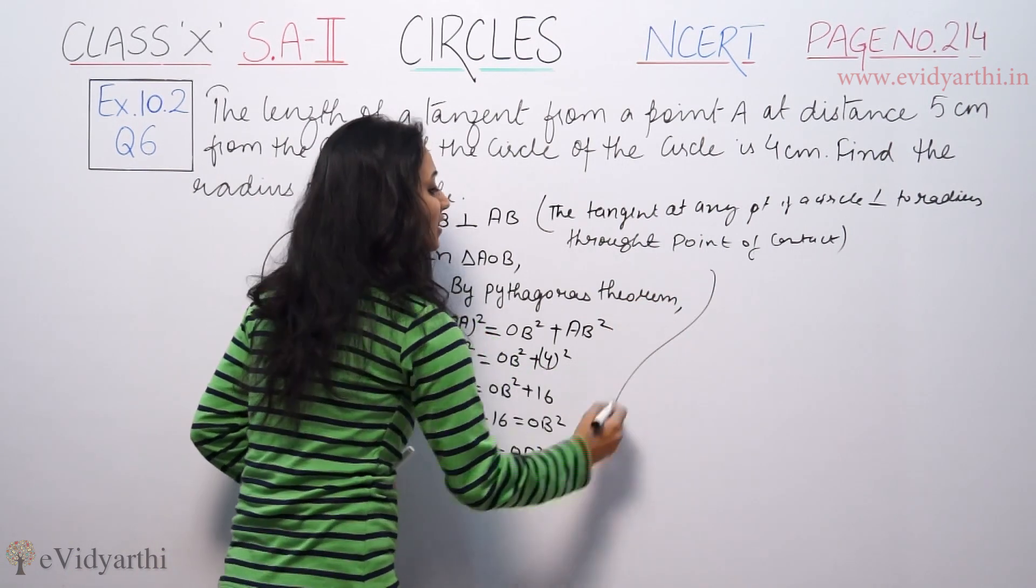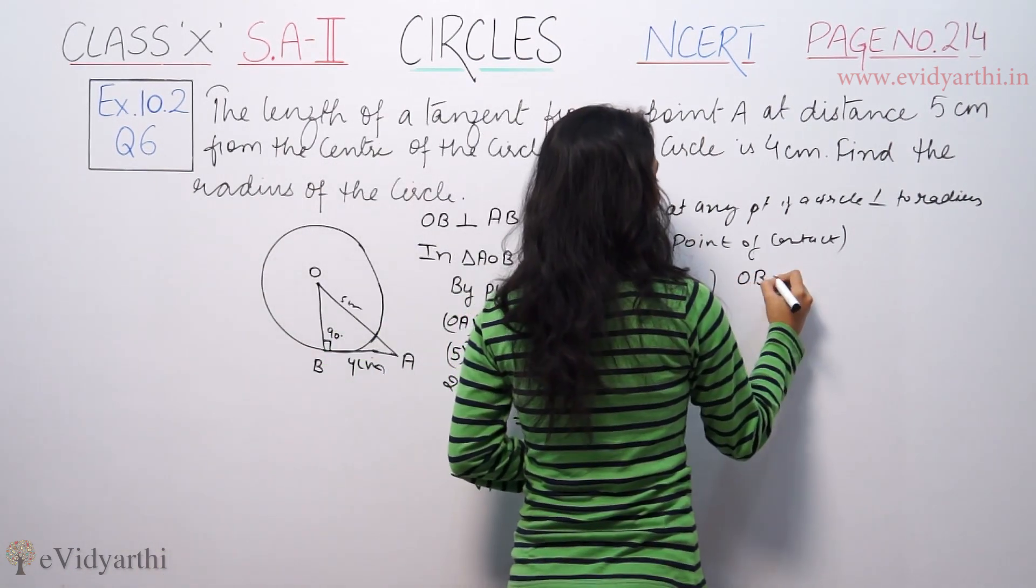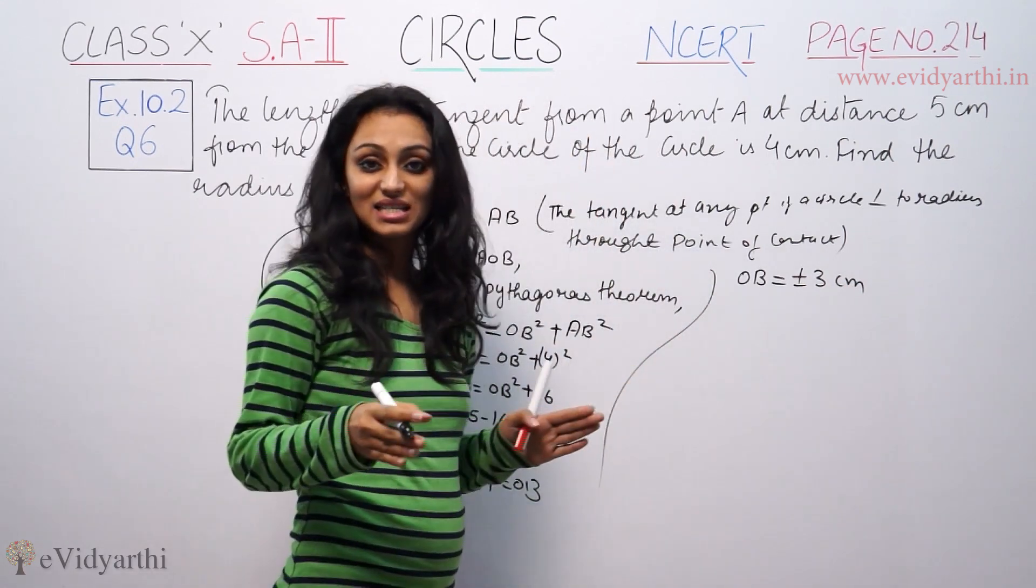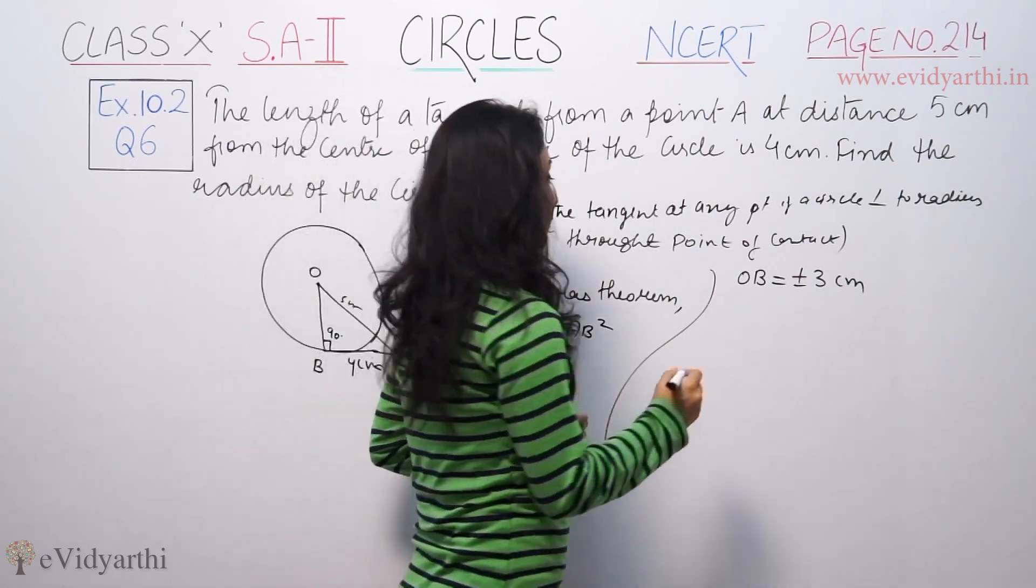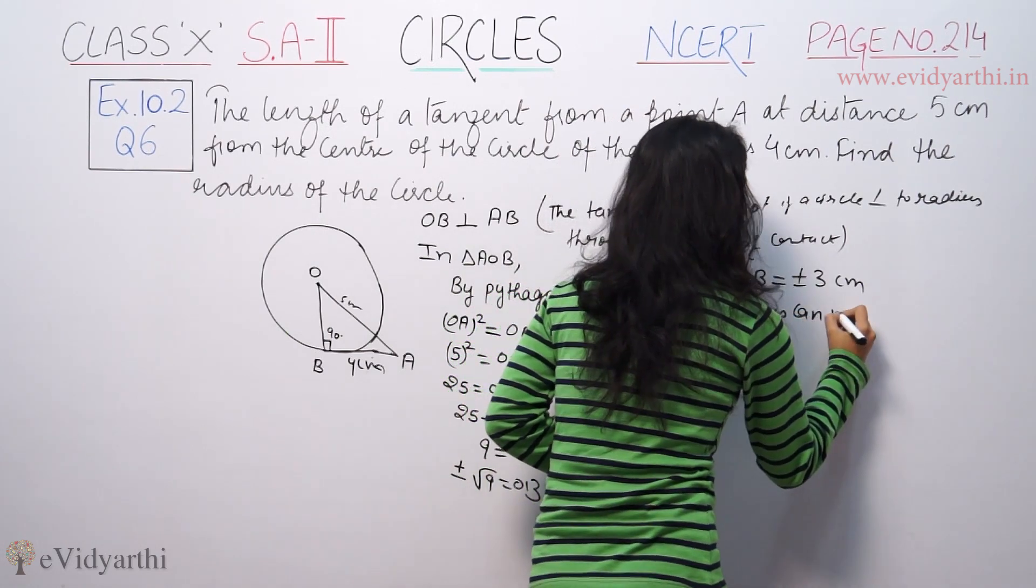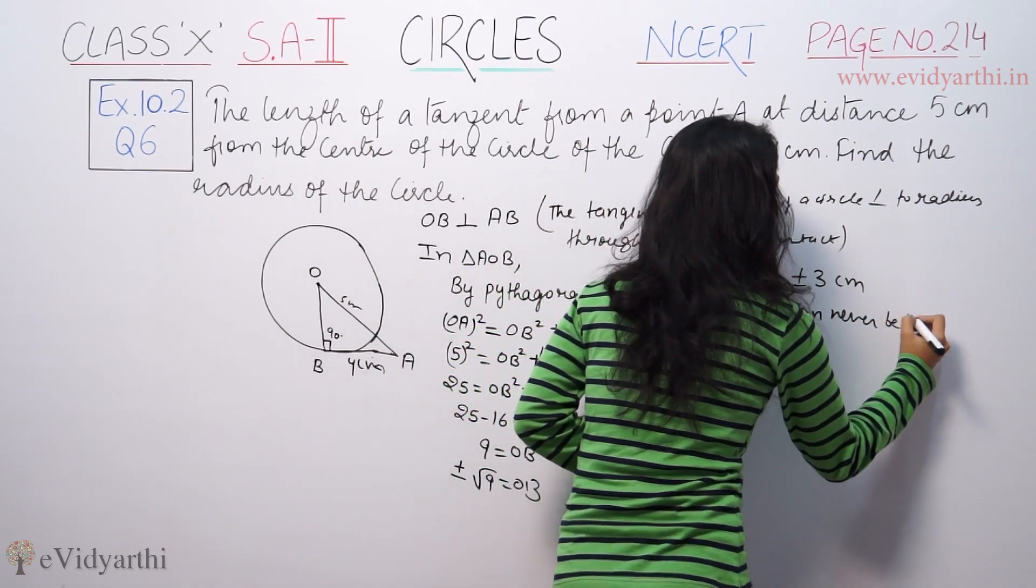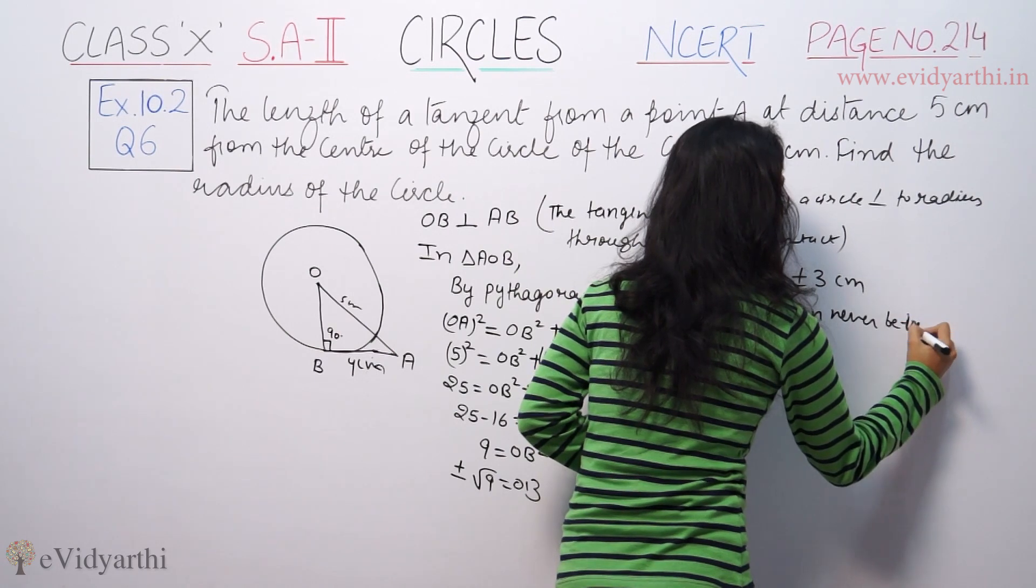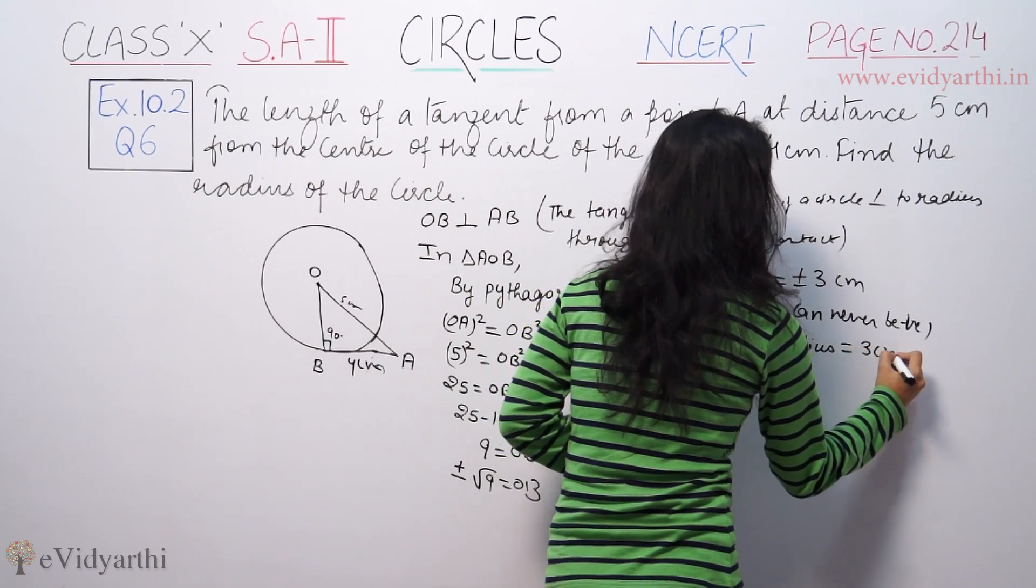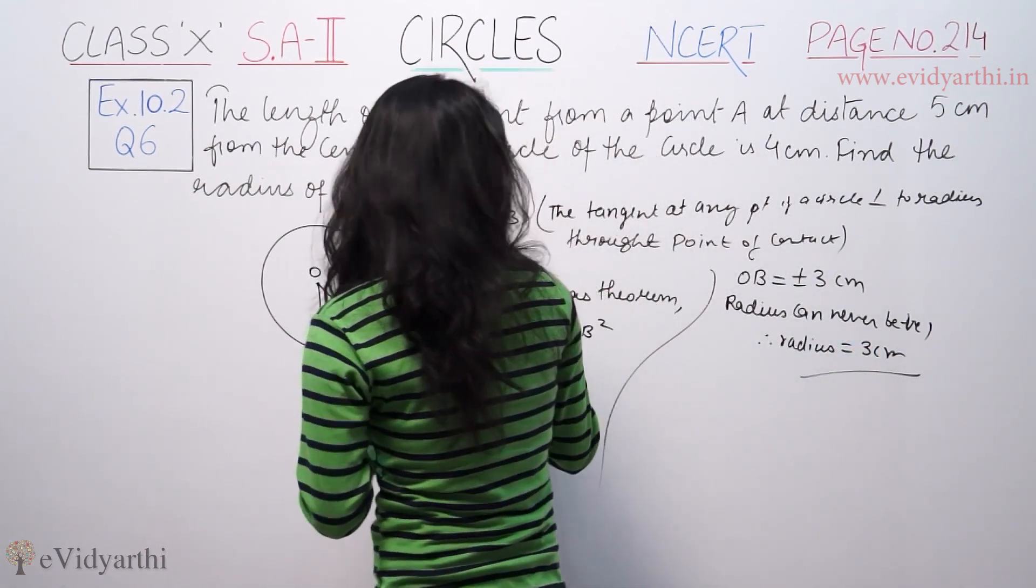But radius can never be negative. Radius can never be negative. Therefore radius is equal to 3 centimeters.